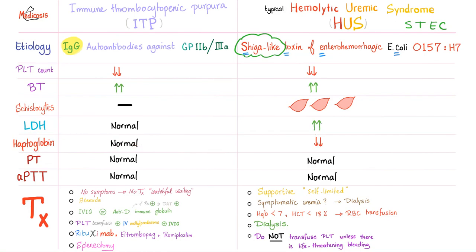Haptoglobin is normal in ITP but could be low in hemolytic uremic syndrome because it's a hemolytic anemia. PT and PTT are normal in both cases because coagulation factors are fine — secondary hemostasis is perfect.